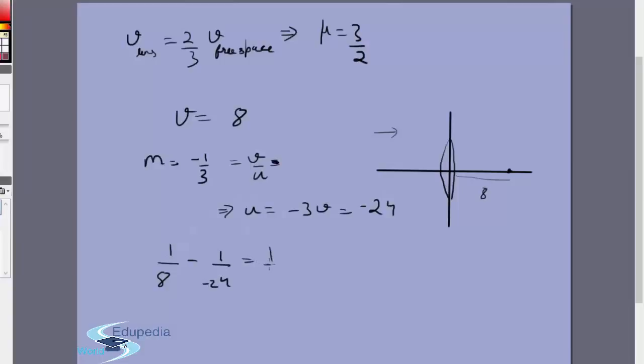Now just straightforward application of the lens formula: 1/8 minus 1/(-24) is equal to 1/F. 3/24 plus 1/24 = 4/24, which means F comes out to be equal to 6.